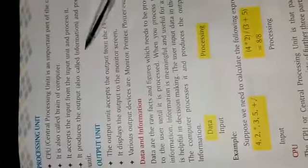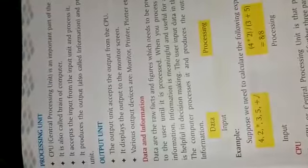Next is processing unit. Processing unit aapka CPU ho gaya. CPU is the brain of computer. Yeh input ko accept karta hai, phir process karta hai, aur process ke baad output ko send kar deta hai. Next is output unit. Output unit mein processed data ko accept kiya jaata hai, jisko hum dekh paate hain ya samajh paate hain. Ismein output devices ka use hota hai — monitor, printer, plotter, etc.